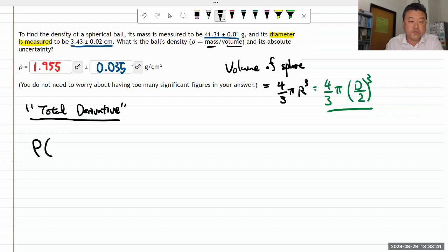I have ρ (rho) which is a function of two parameters: the mass and the diameter. Any uncertainty in ρ is going to be dependent on the uncertainties of the mass and the diameter. The way to propagate that error is to say this.